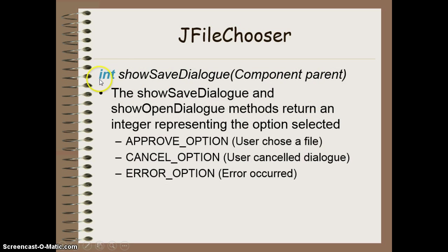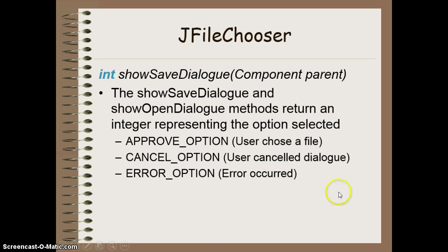The second thing you need to realize is the return type is an integer value — it's not an actual file. What this method does is return an integer that indicates whether or not the user was successful in selecting a file. There are three integer options it can return: approve option, cancel option, or error option. These are all constant integers that are part of the JFileChooser class, so you access them by saying JFileChooser.APPROVE_OPTION, CANCEL_OPTION, and so on. The approve option is returned when the user successfully selects a file, cancel option is returned when they click cancel, and error option occurs when they can't select a file properly but also haven't cancelled — some sort of error like the file's not found or something's been corrupted.